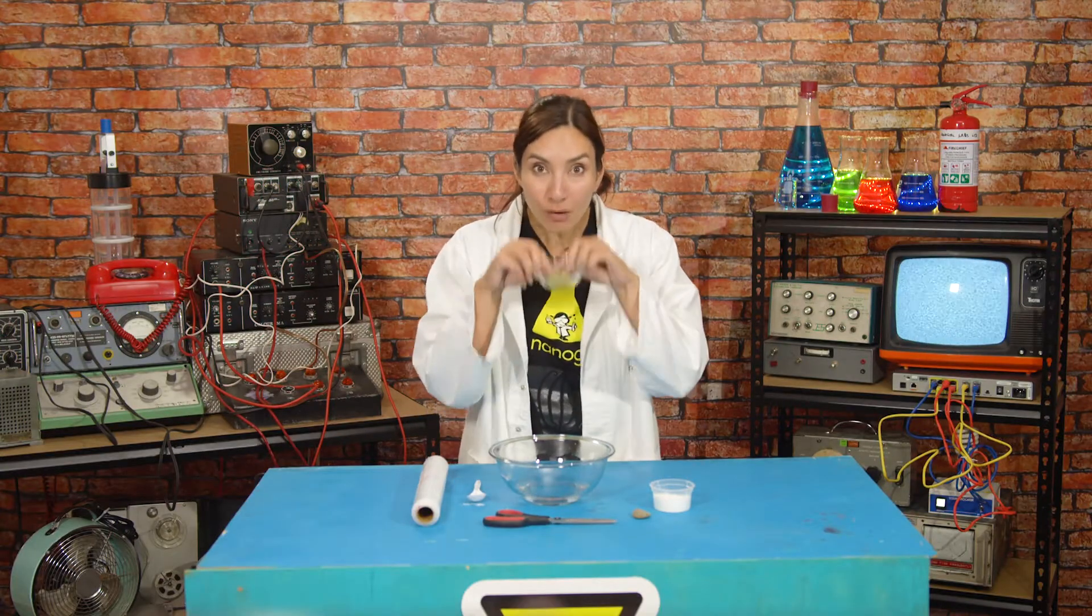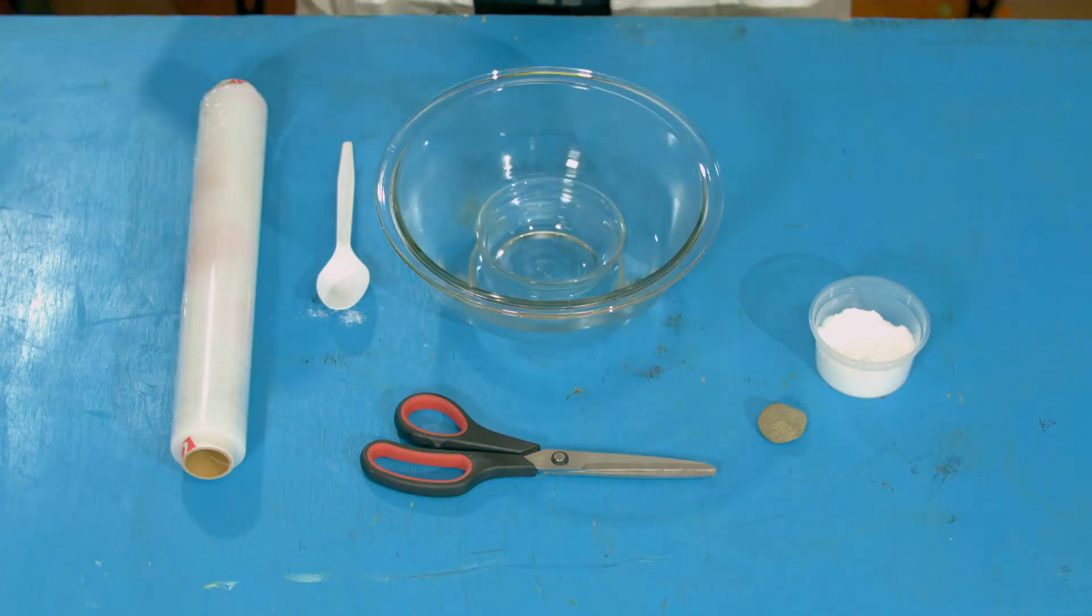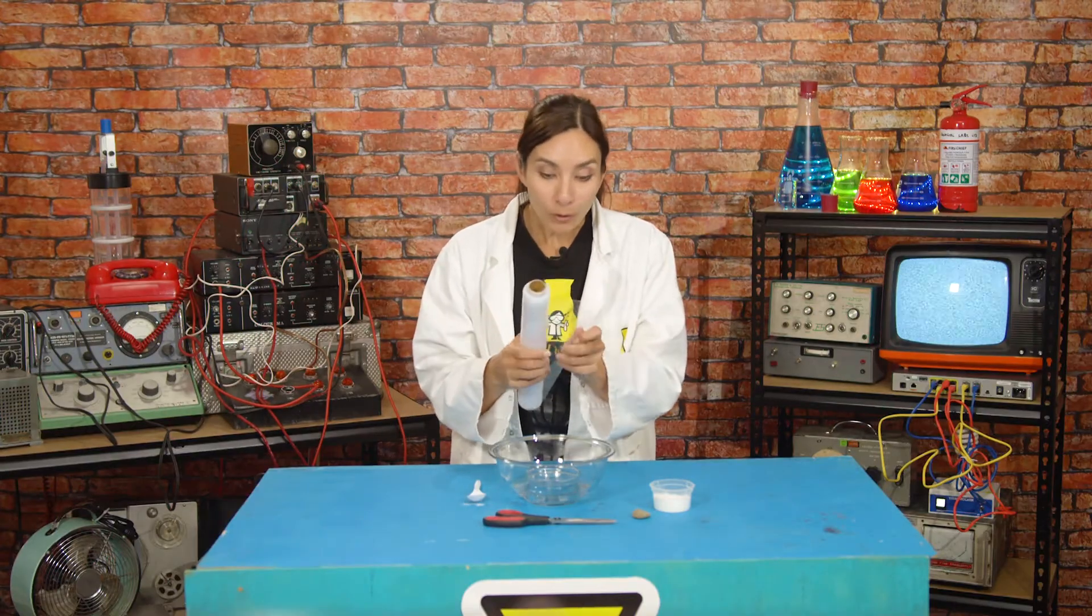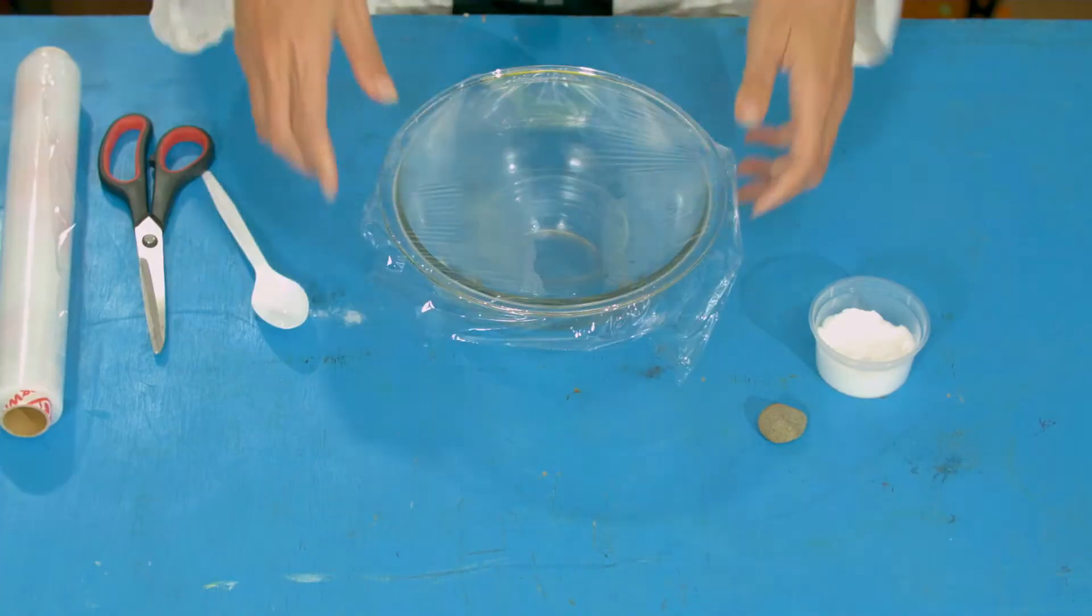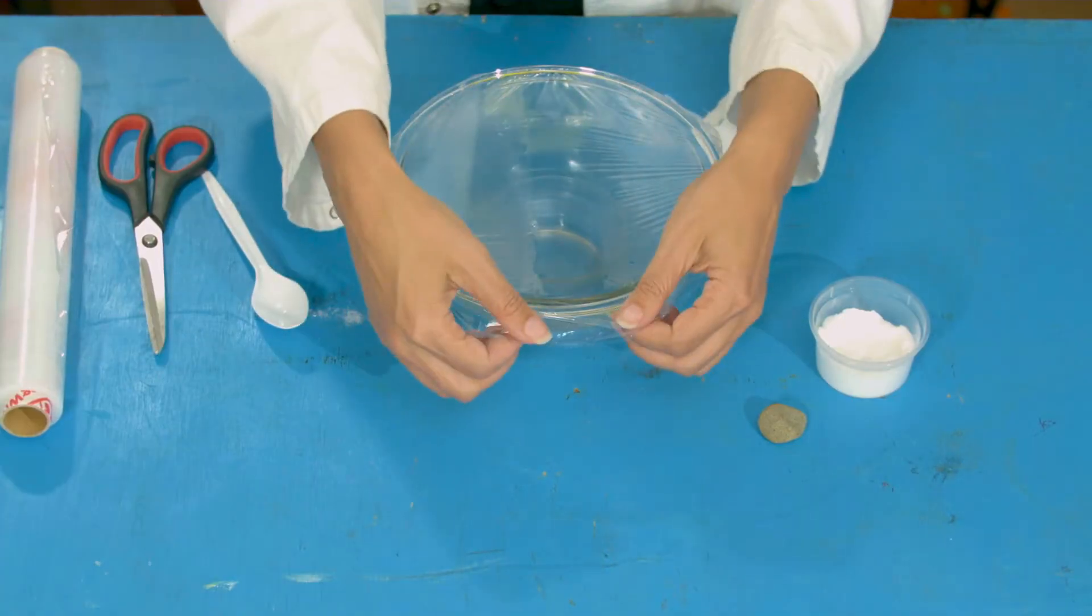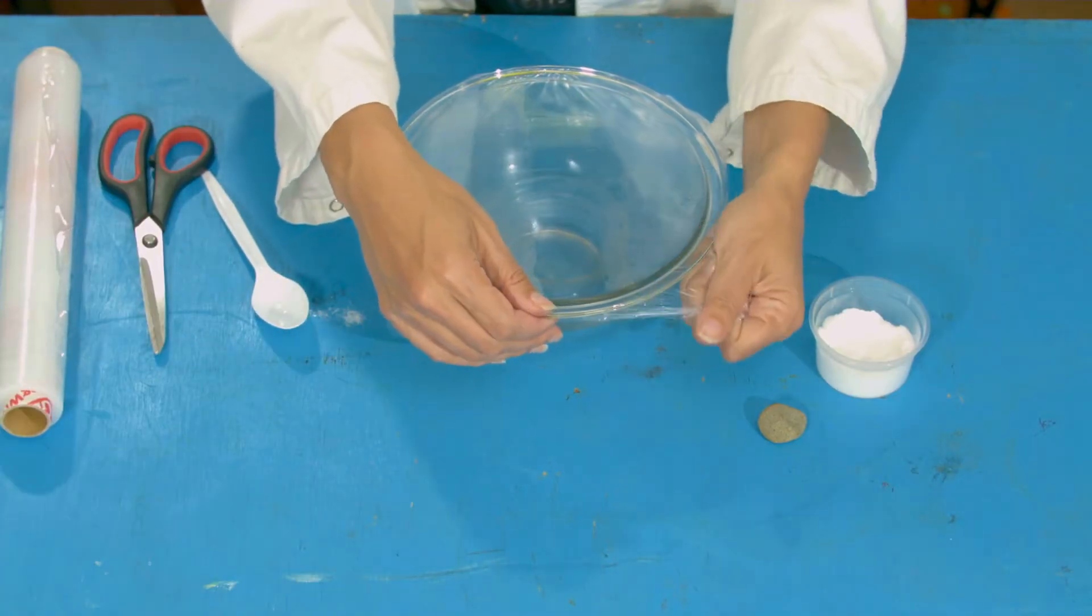Okay, next you're going to place your smaller container right in the center of the larger one. Now make sure you don't get any salt water on the inside. This is going to pretend to be a landmass like an island that could be in the middle of your ocean. Next, cover the top with your plastic like so. Make sure it's fully sealed all around the outside.